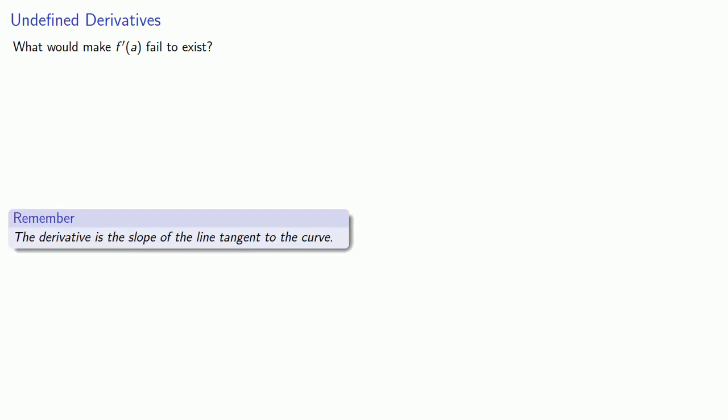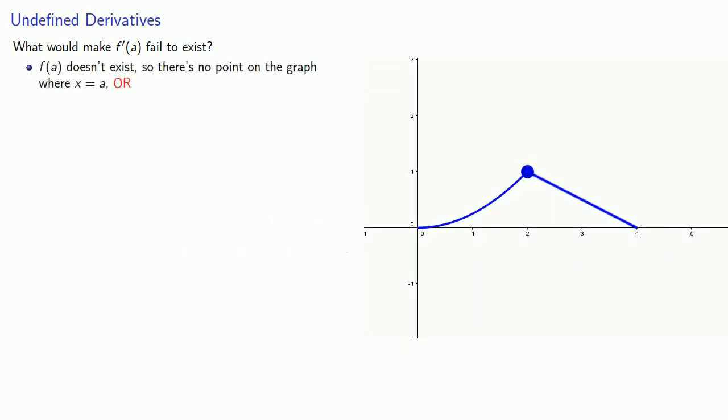the line tangent to the graph at x = a. So one possibility is that f(a) doesn't exist, so there's no point on the graph where x equals a. Or another possibility is that there is